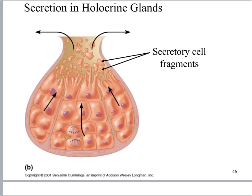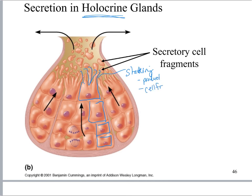Now we're looking at the sebaceous gland, which is using holocrine secretion. You see stacked cuboidal cells, and the most apical cell has this funky shape — basically it is shattering. So instead of doing a nice, tidy exocytosis, the cell shatters, and then the product and cell fragments are secreted out together. In this case, the sebum is both oils and cell fragments.